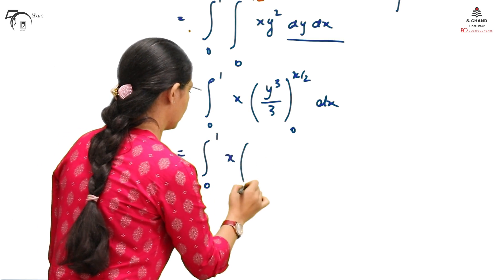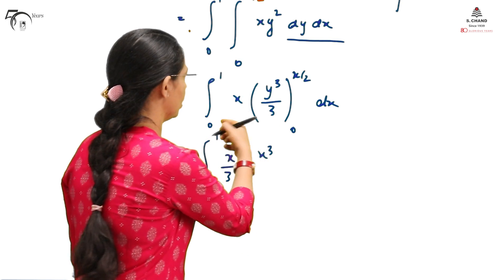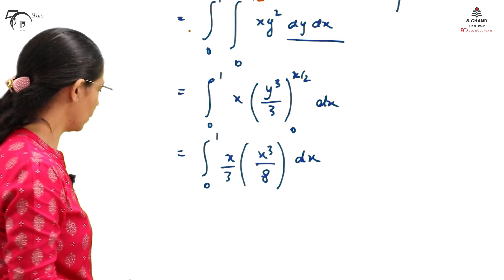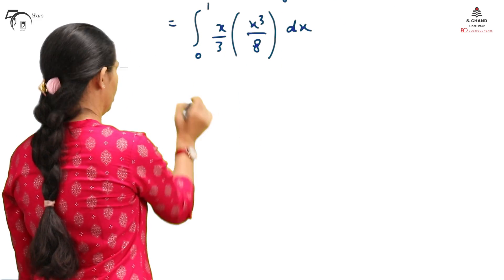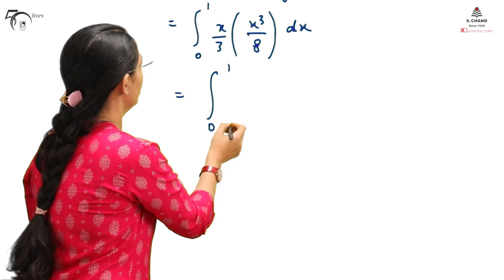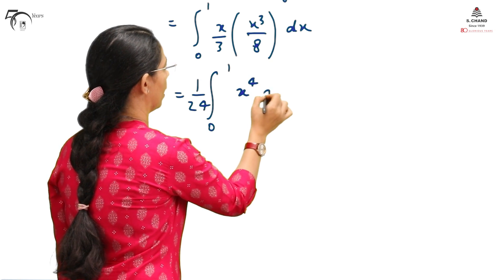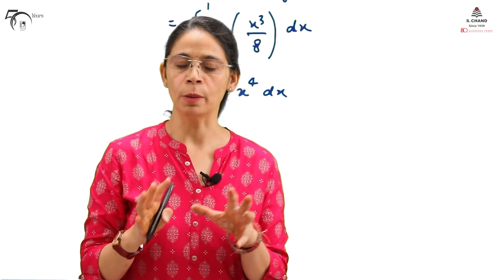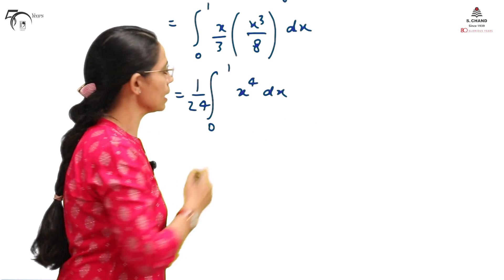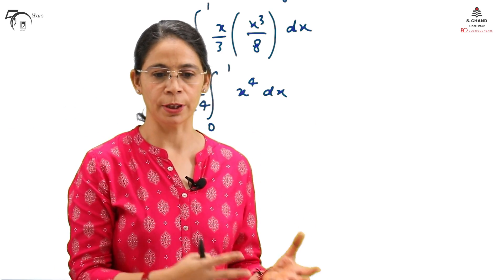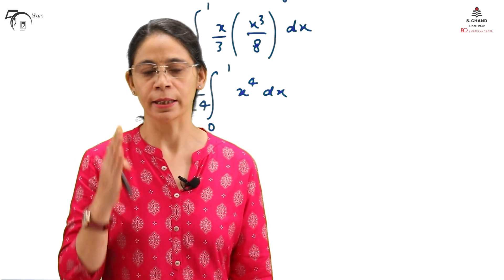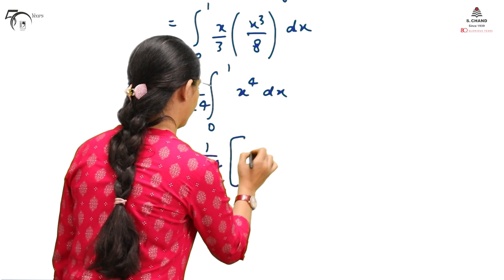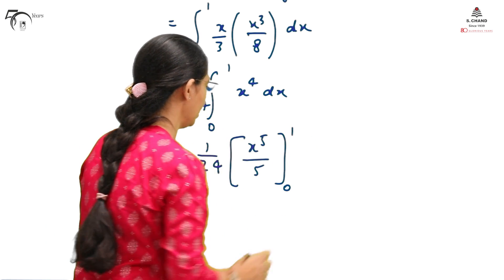Applying the rules of integration: x is treated as a constant, and y² integrates to y³/3. Substituting the limits from 0 to x/2, after substitution we get x · (x/2)³ / 3 = x · x³/8 / 3. Taking the constant 24 out, we are left with ∫₀¹ x⁴ dx. The inner integral is now free of y, confirming it has converted to a single integration — this is also called iterated integration.